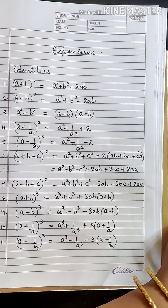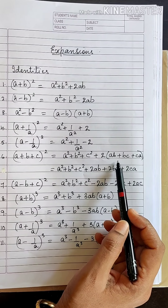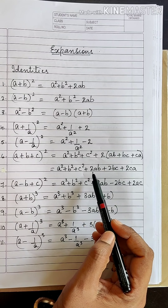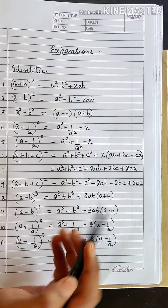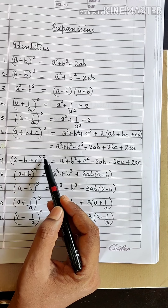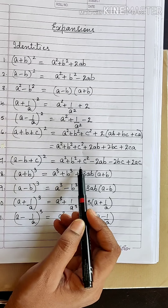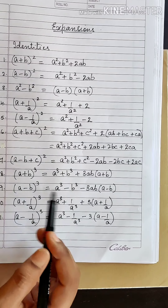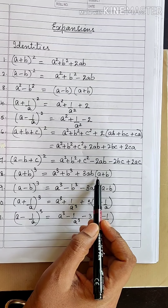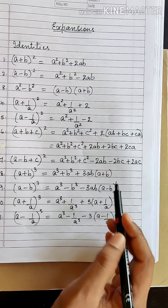Next, (A + B + C)² = A² + 2(AB + BC + CA), or you can write it as A² + B² + C² + 2AB + 2BC + 2CA. Also, (A - B + C)² = A² + B² + C² - 2AB - 2BC + 2AC. Coming to the cubes: (A + B)³ = A³ + B³ + 3AB(A + B), and (A - B)³ = A³ - B³ - 3AB(A - B).